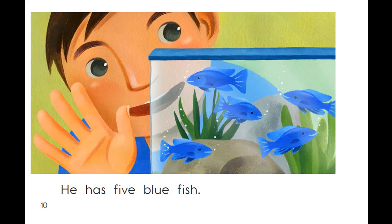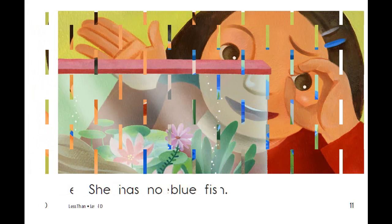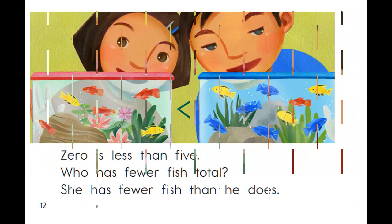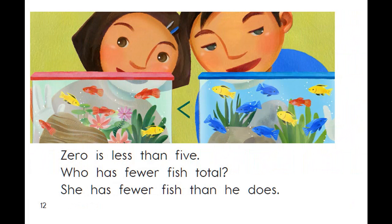He has five blue fish. She has no blue fish. Zero is less than five.